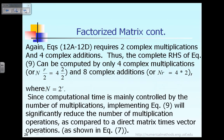The computation requires two complex multiplications and four complex additions. To summarize: computing the inner product requires two multiplications and four additions. Computing the outer product also requires two multiplications and four additions. Therefore, the total operation count for both inner and outer product is four multiplications and eight additions.